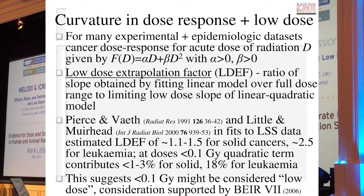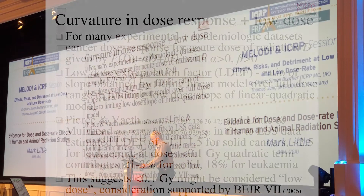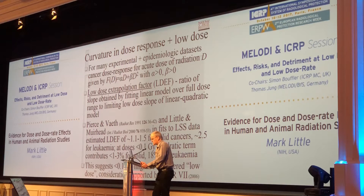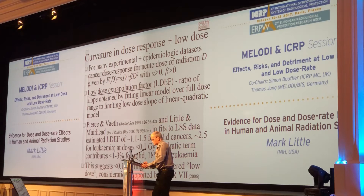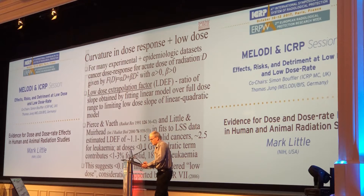For many experimental epidemiologic data sets, it's often been the case that you can model the dose response by a linear quadratic function, as shown at the top here. The low-dose extrapolation factor is simply the ratio of the slope obtained by fitting the linear model — in other words, the model with just the alpha-D term — over the full dose range, to the limiting low-dose slope of the linear quadratic model fit over the full dose range.